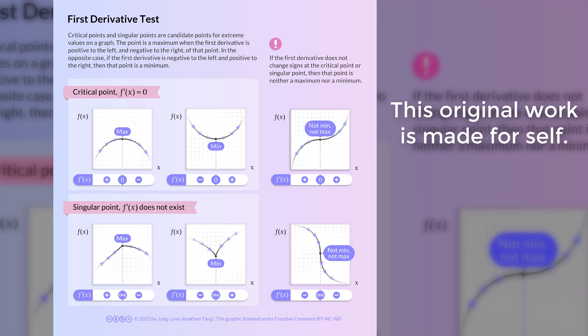At a maximum point, whether the maximum point is a critical point or a singular point, the derivative is increasing to the left of this point and then decreasing to the right of this point.